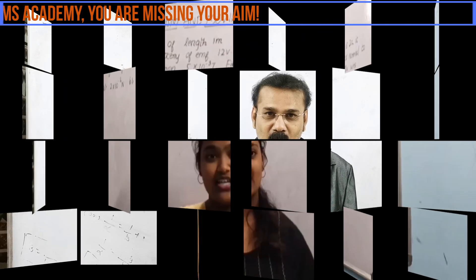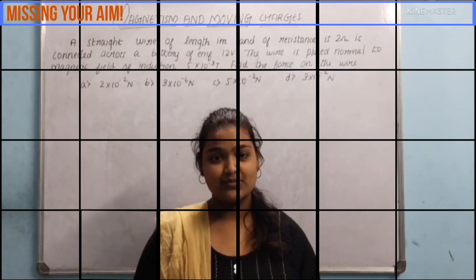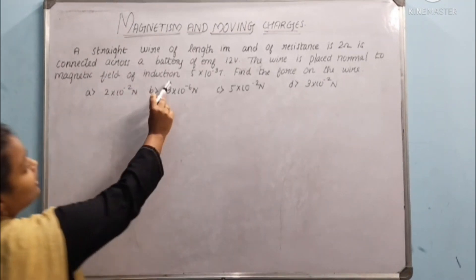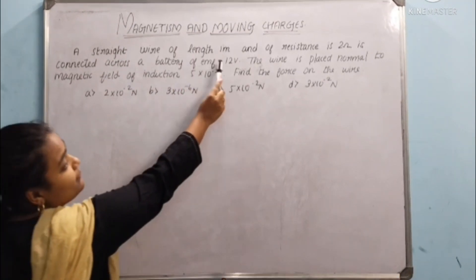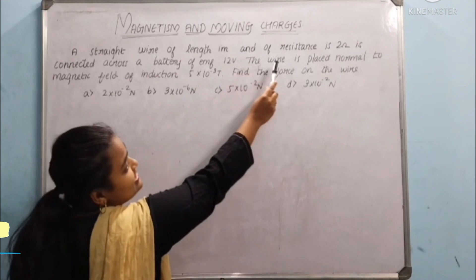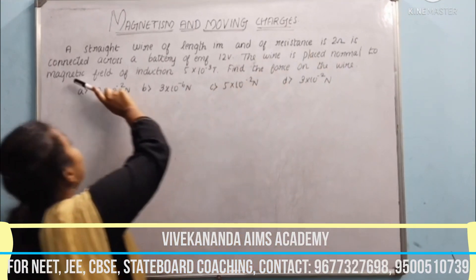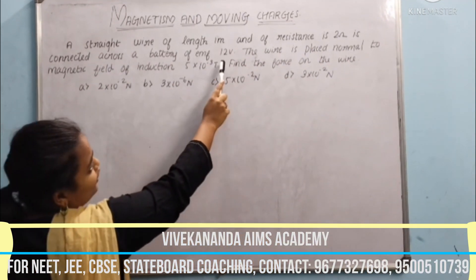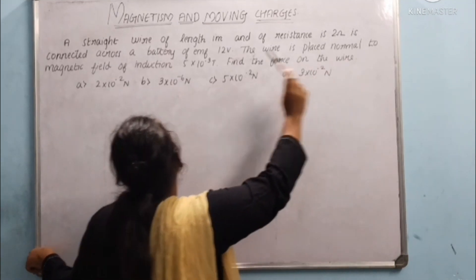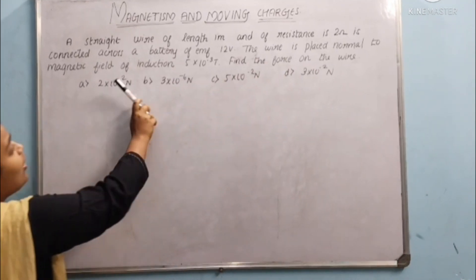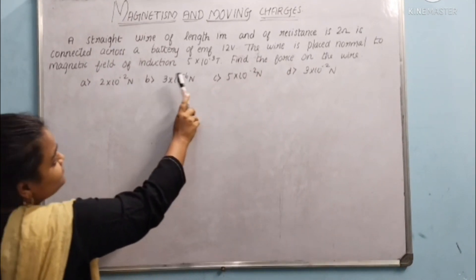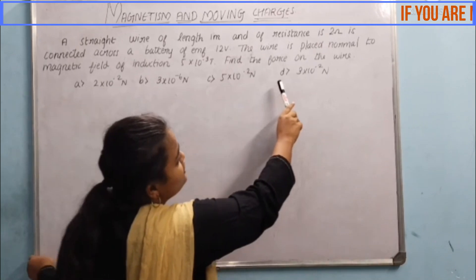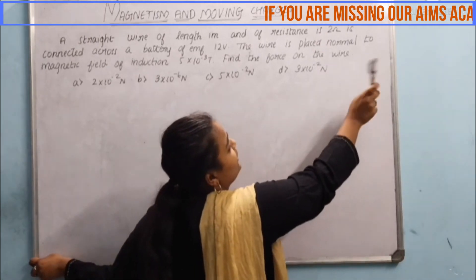Let us move on to the session now. The question is: a straight wire of length 1 meter and resistance 2 ohm is connected across a battery of EMF 12V. The wire is placed normal to the magnetic field of induction 5 into 10 power minus 3 tesla. Find the force on the wire.